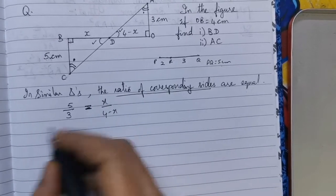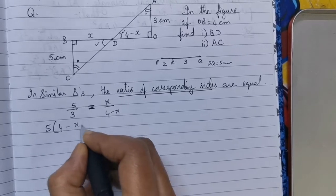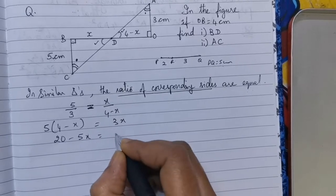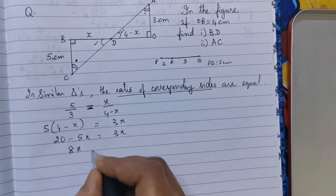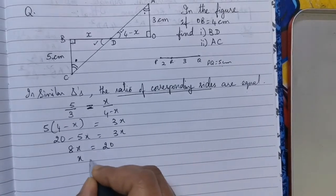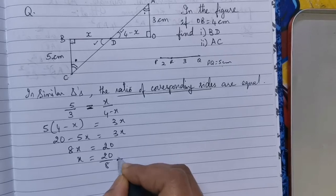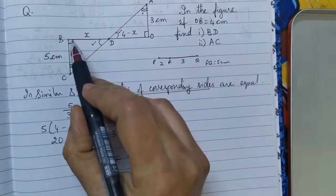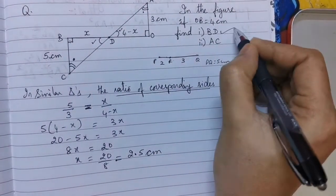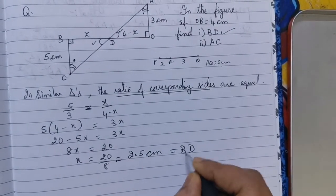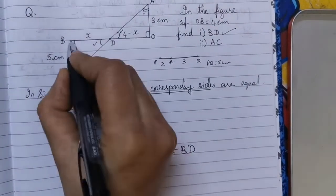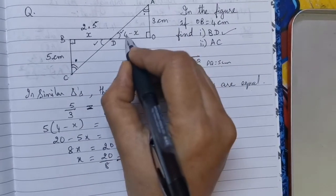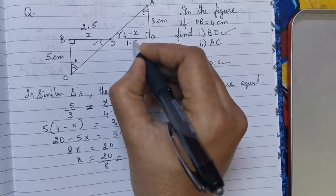To find the value of X, we cross multiply: 5 into (4 minus X) equals 3X. So 20 minus 5X equals 3X, therefore 8X equals 20, and X equals 20 by 8 which is equal to 2.5 cm. We wanted to find BD, so BD equals 2.5 cm. Now we know BD is 2.5, therefore DO will be 4 minus 2.5 which is 1.5 cm.